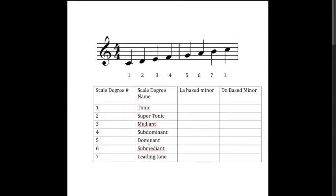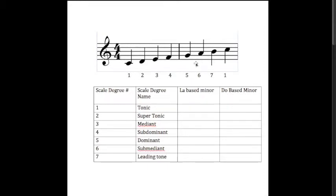Now, you may be wondering why some of these names are applied. In terms of the tonic, mediant, and dominant, those are just the names they're given, but the other ones are given specifically in relation to other pitches. The second scale degree is the supertonic because it's above the tonic — super meaning above. The subdominant is called that because the dominant is a fifth above the first scale degree, and the subdominant is a fifth below the first scale degree. The submediant is called that because while the mediant is a third above the first scale degree, the submediant is a third below it. And the leading tone is called the leading tone because it leads to the first scale degree.